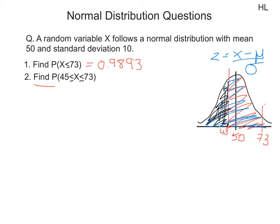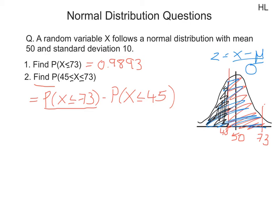We write this as the probability that x is less than or equal to 73, minus the probability of x being less than or equal to 45. We've already calculated the probability of x being less than or equal to 73, so we need to calculate the probability that x is less than or equal to 45.